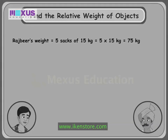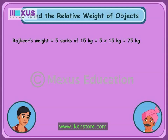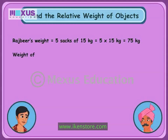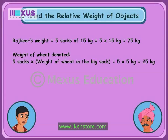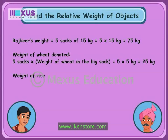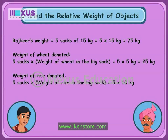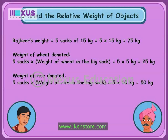But Bhola, please tell me, what is the weight of rice and the weight of wheat individually? The weight of wheat that will be donated is equal to 5 sacks multiplied by 5 kilograms, which is equal to 25 kilograms. The weight of rice that will be donated is equal to 5 sacks multiplied by 10 kilograms, which is equal to 50 kilograms.